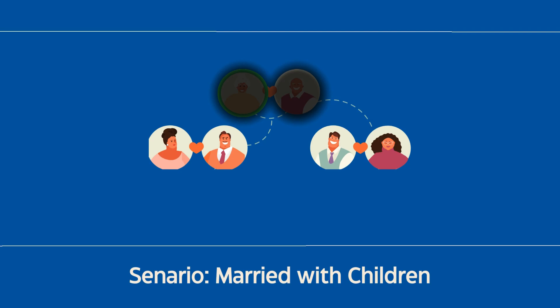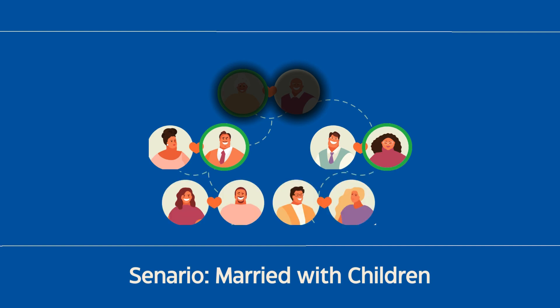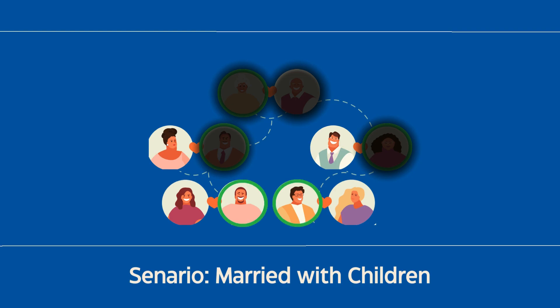However, what if your spouse dies before you, or you both pass away together? If that happens, your child or children become the backup beneficiaries. If your children have passed away, their share goes to their children — your grandchildren. If there are no grandchildren, the share is divided among your surviving children.